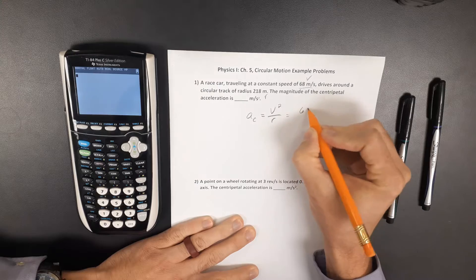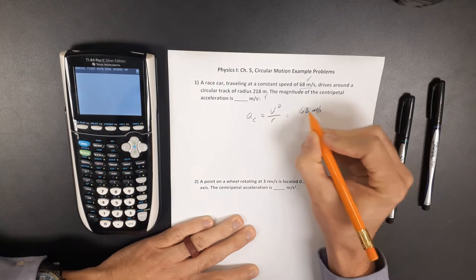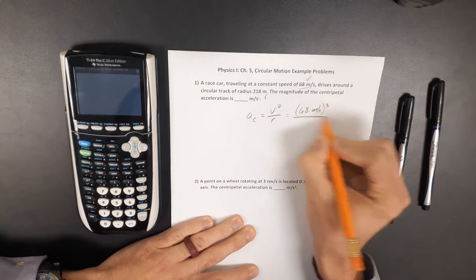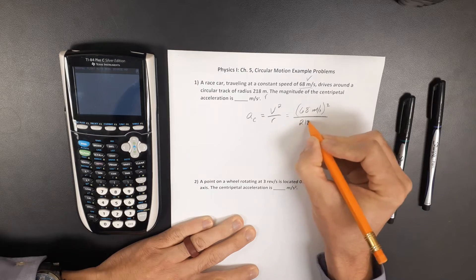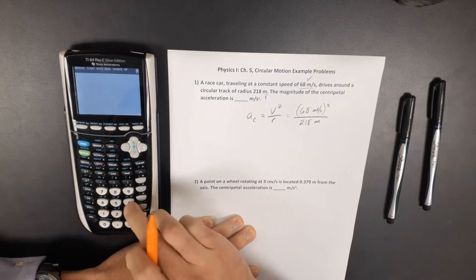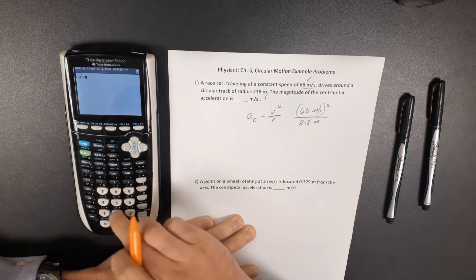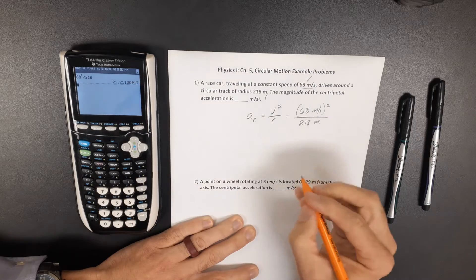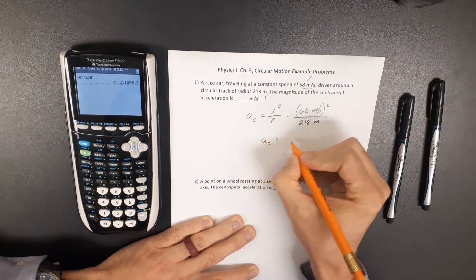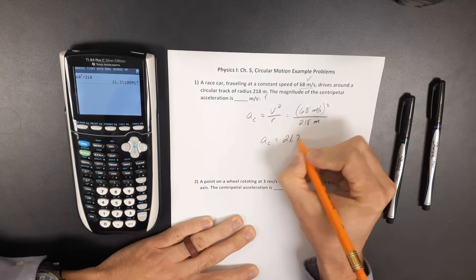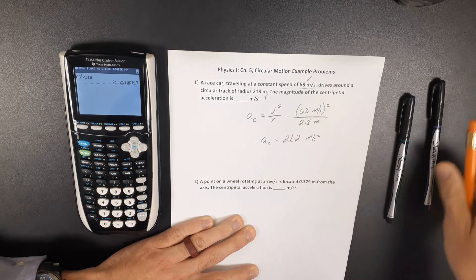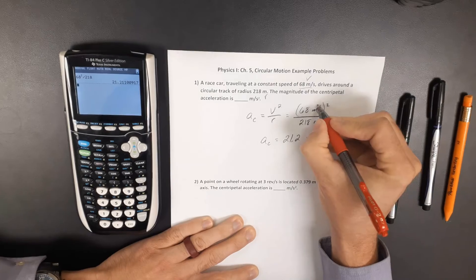And so we can take that speed 68 meters per second squared, divide that by 218 meters. So 68 squared over 218, we get a centripetal acceleration of 21.2 meters per second squared.